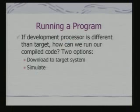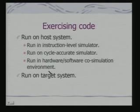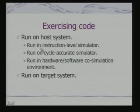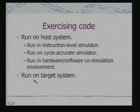If the development processor differs from the target, you either download to the target or simulate. The basic process of exercising code involves running it on an instruction level simulator, a cycle accurate simulator, or in a hardware-software co-simulation environment where hardware components are also simulated. Once satisfied with the software in this environment, you proceed to the target system. The locator as a system software component and the startup code become critically important at this stage.